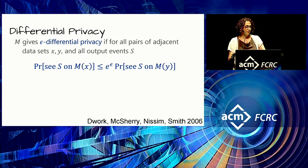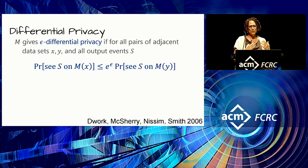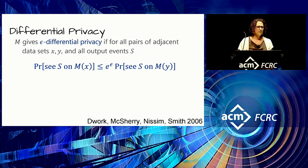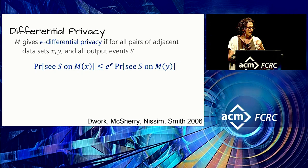This is the formal definition of differential privacy, co-authored with Frank McSherry, Kobbi Nissim, and Adam Smith. Privacy is not binary — there's a parameter epsilon that controls our degree of privacy loss. Our algorithms, usually called M for mechanism, operate on adjacent databases: pairs X and Y that differ in the data of just one person — for example, everyone in this room versus everyone in this room without me.